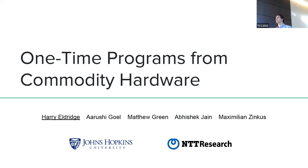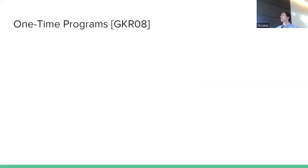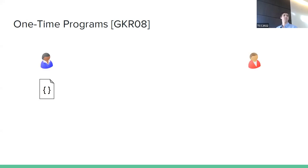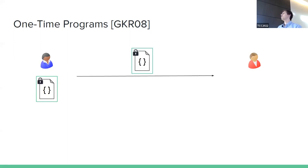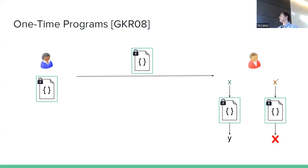Our next speaker is Harry Eldridge, telling us about one-time programs from commodity hardware. Thank you. This is joint work with Fereshteh Gol, Mac Green, Abhishek Jain, and Max Zinkus. One-time programs are a form of limited-use obfuscation, first put forward by Goldwasser, Kalai, and Rothblum in 2008. The idea is a program you can only run once: Alice has a program she wants Bob to execute on a single input of his choice. She processes it to make it one-time, sends it to Bob, who executes it once. Afterward, any further execution attempt yields nothing — the program self-destructs.